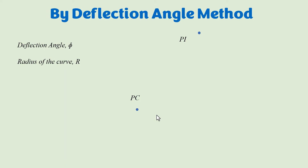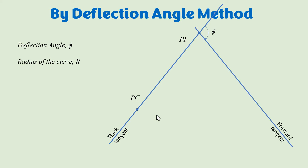Since the deflection angle is given to us, using any instrument that can measure horizontal angles we can establish the forward tangent. Once the basic data is known, we can find the tangent length and ultimately the point of tangency. We can also draw the center of the curve since the radius is known, and there is another line connecting PC and PT which is the long chord.